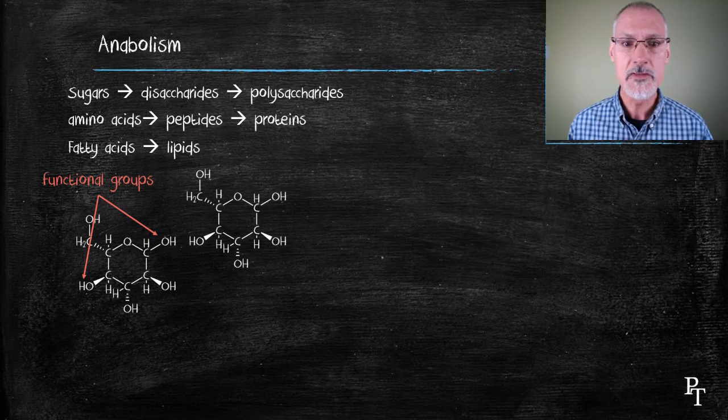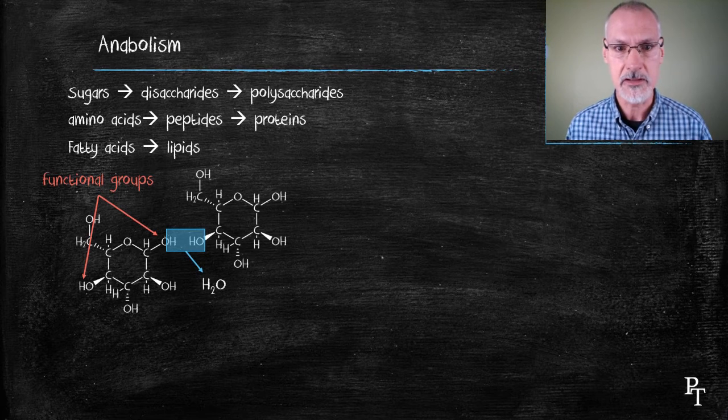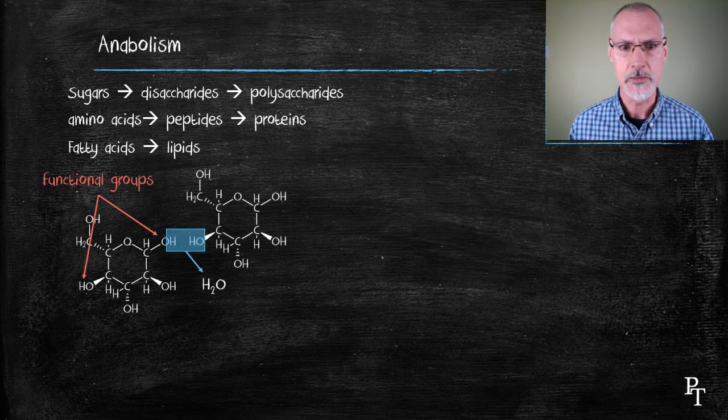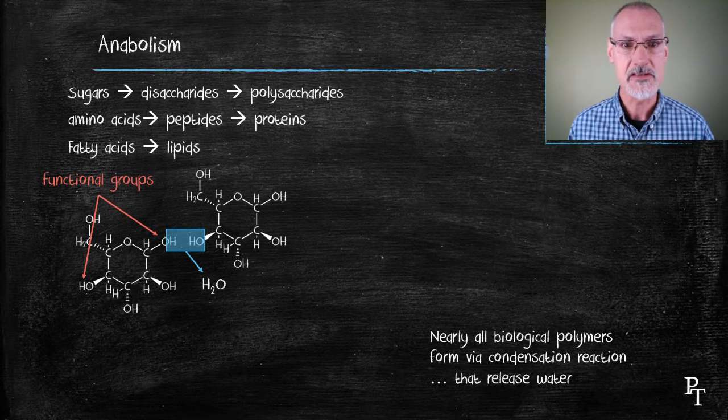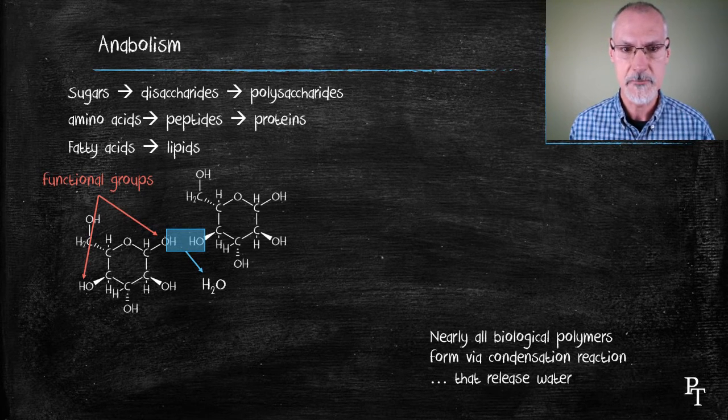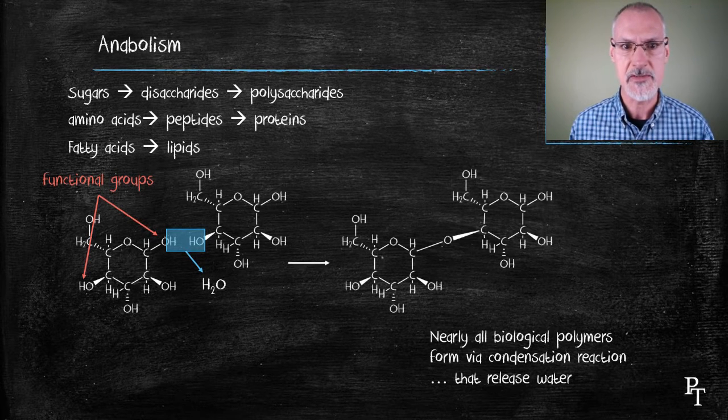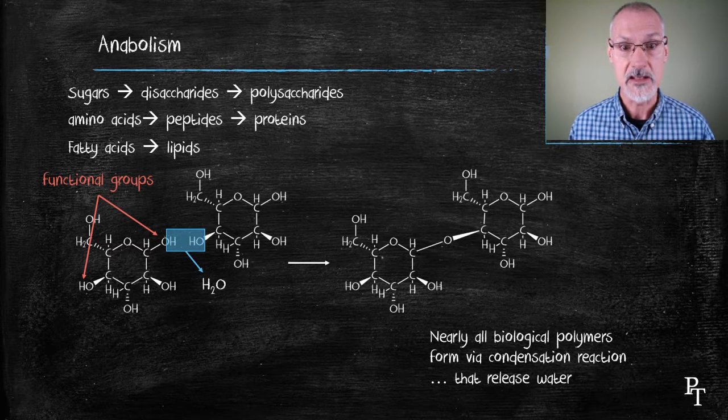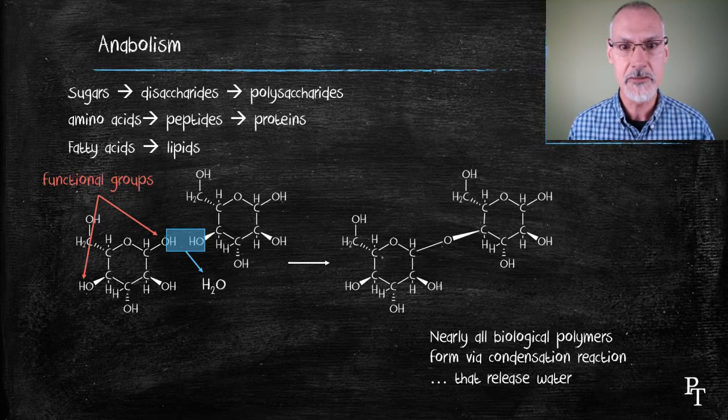We begin by removing a water molecule from between the two of them. We've seen that before in organic chemistry. Almost all biological processes build molecules this way by removing water molecules. That's called a condensation reaction. When that water molecule is removed, that oxygen now stretches its bond to join the carbon and we formed a disaccharide. That disaccharide has functional groups available at both ends to continue the process.